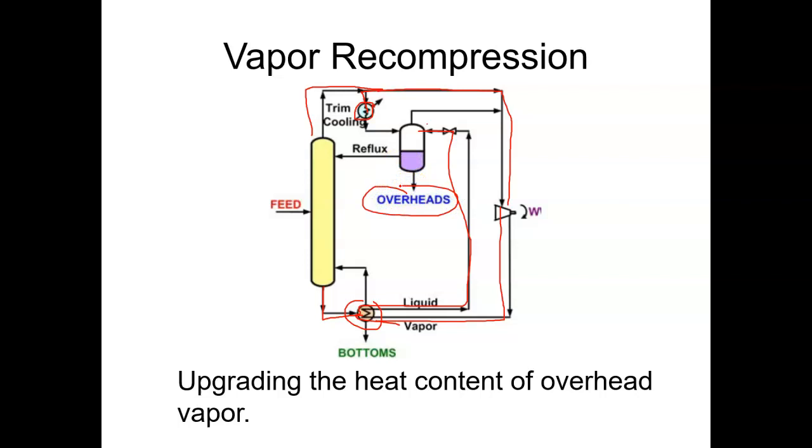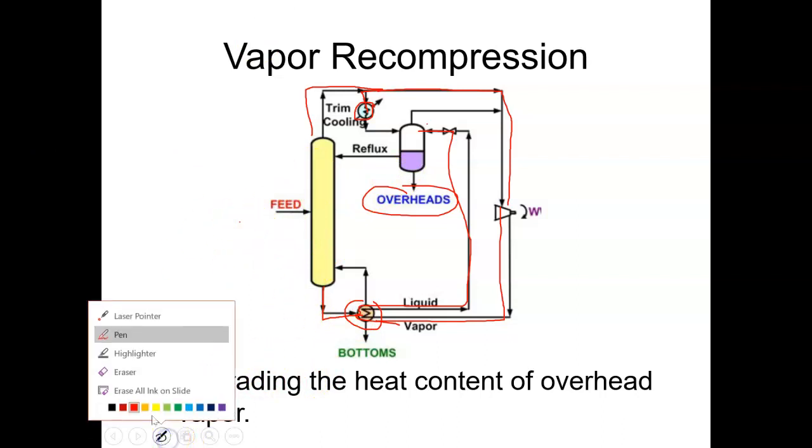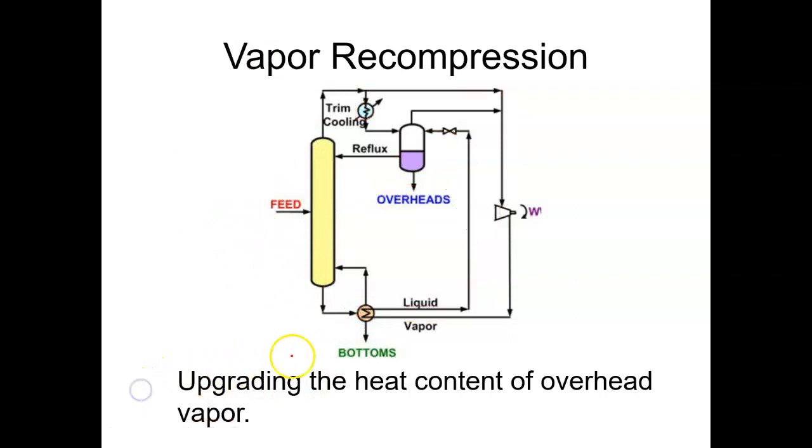What happens is that we upgrade the heat content of overhead vapor and thereby exchange the energy with the liquid which is coming from the bottom. This is the basic idea of how we use the energy enhancement in order to save the energy for the given column.